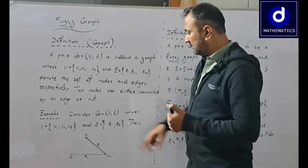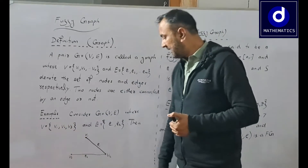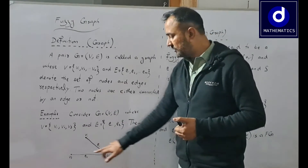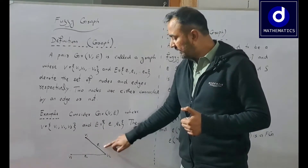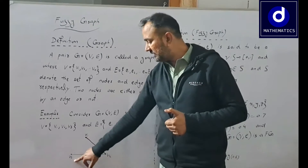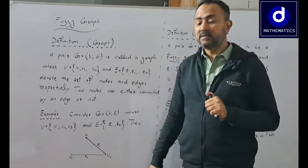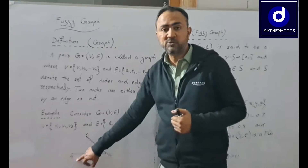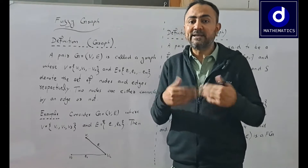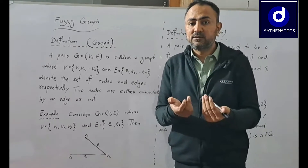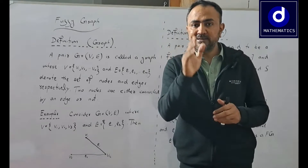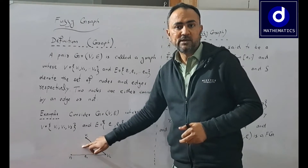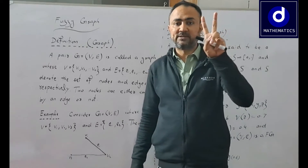For example, consider a graph G = (V, E) where we have three vertices v1, v2, v3, and two edges. We can see that v1 and v2 are connected by edge e1, and v2 and v3 are connected by edge e2. This means there exists a relation between v1 and v2, and between v2 and v3. If two vertices are related, there is an edge; if not, there is no edge.